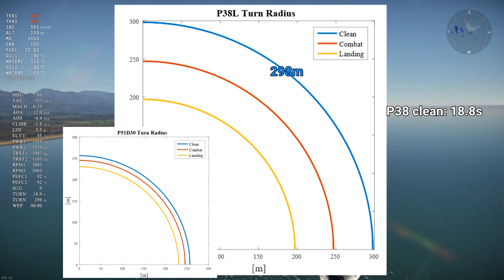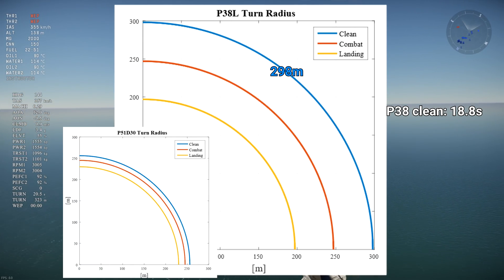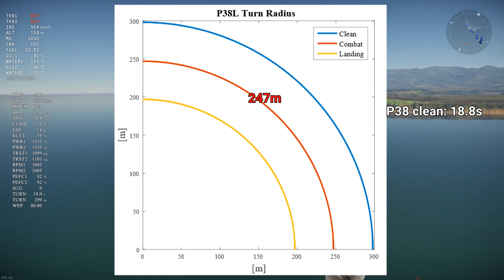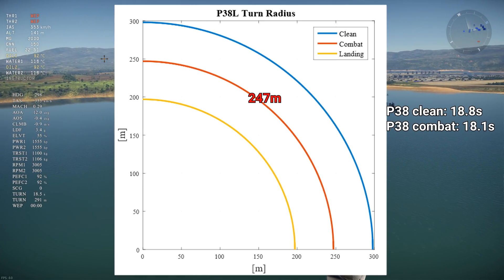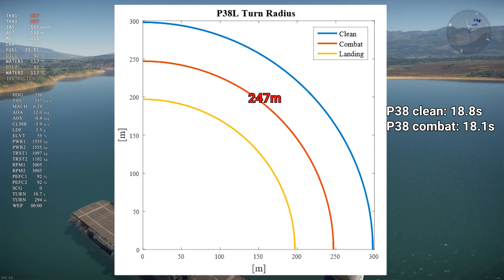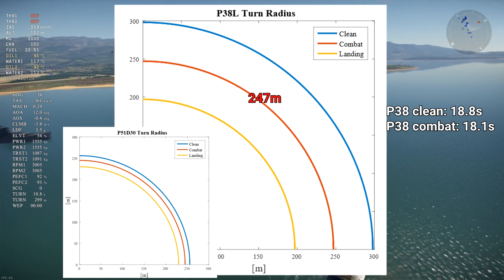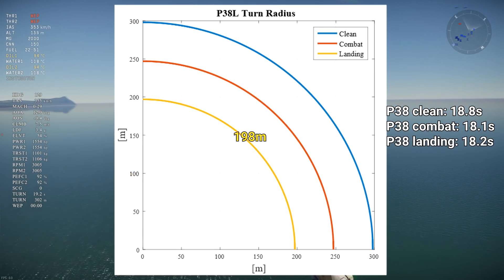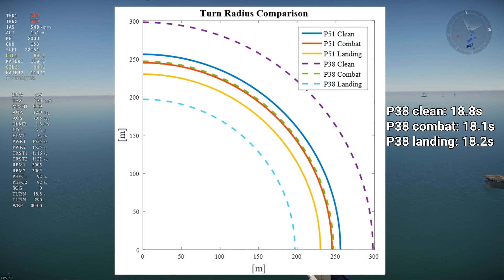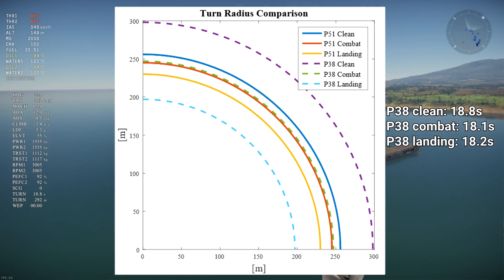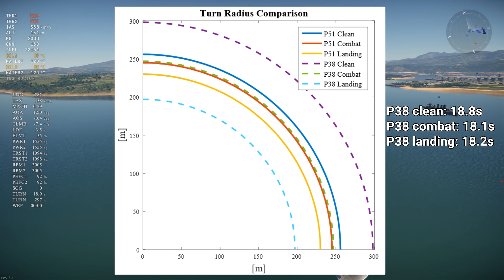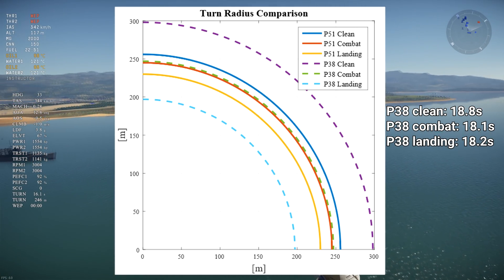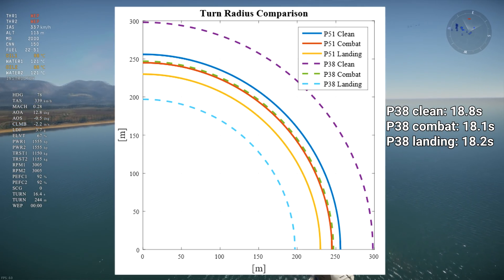Notice that the turn radius is larger than the P-51's when both aren't using flaps. With combat flaps, the P-38's turn radius shortens to 247 meters, while the turn time reduces to 18.1 seconds. A P-38 with combat flaps has a similar turn radius and turn time as a P-51 with combat flaps. With landing flaps, the P-38 turns much tighter than the P-51 even with landing flaps, showcasing the P-38's Fowler flaps. It goes from being significantly outturned by the P-51 when clean to significantly outturning the P-51 when landing flaps are used.